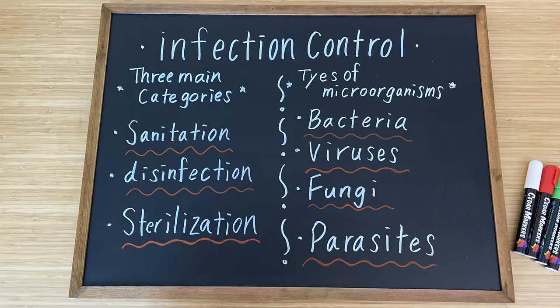Infection control is used to prevent the spread of disease and kill certain or all microbes. It is divided into three main categories: sanitation, disinfection, and sterilization.